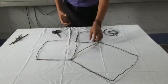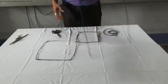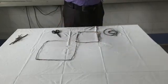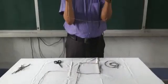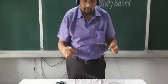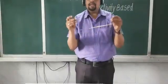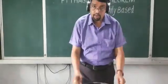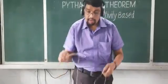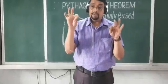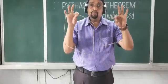What is the meaning of square, actually? A square is a shape where all sides are the same. So now I am going to show you that the area of this portion is the same as the area of these two portions.